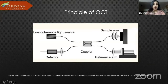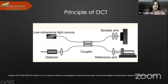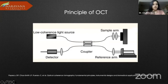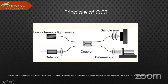Coming to the principle of OCT itself, it is like an optical analog of ultrasound imaging that uses low coherence interferometry to produce cross-sectional images of the retina. It uses infrared light from a superluminescent diode that is divided into two parts — one reflected from a reference mirror and the other scattered from the biological tissue. These two are then reflected to produce the interference pattern, the echo, and multiple A-scans are collated to get a good two-dimensional image.